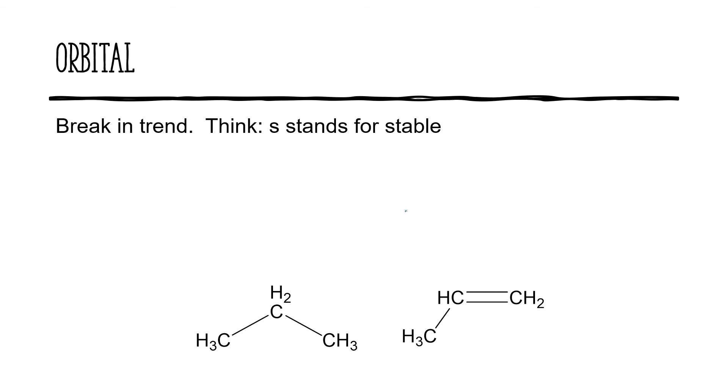Finally, we have the orbital type. This is a bit of a break in the trend. An easy way to remember this other trend, though, is that S stands for stable. What I mean by that is more S character in a bond, the more acidic. Because remember, a more stable conjugate base, or a weaker conjugate base, gives you a more acidic acid.